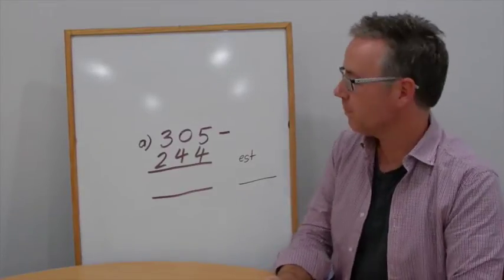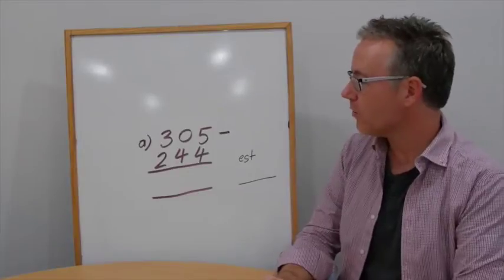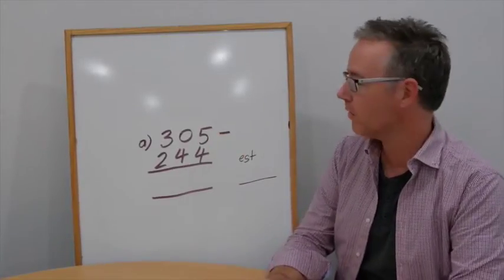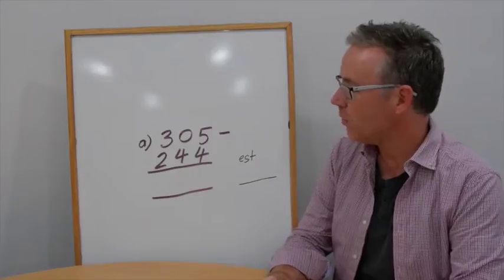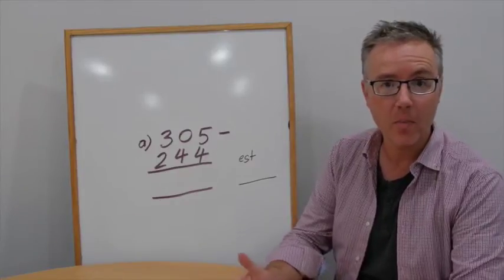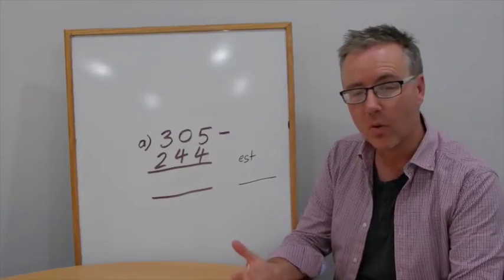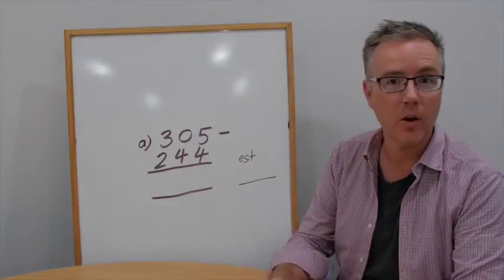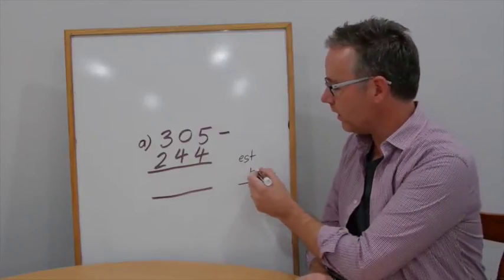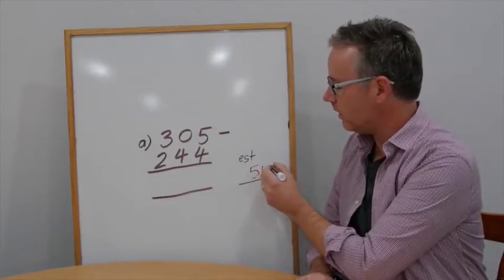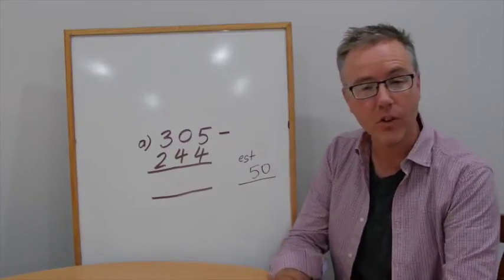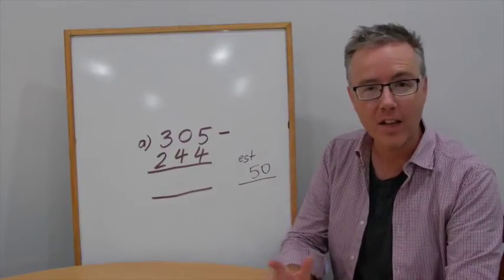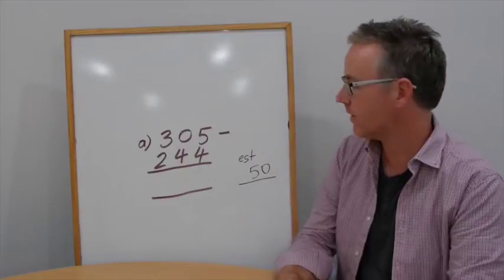So the first one, let's estimate. We'll round 305 down to 300 and we'll round 244 up to 250. So what is 300 take away 250? My estimate is 50. And of course I'll use that at the end when I find my answer to see if I'm on track or not. So let's get started.